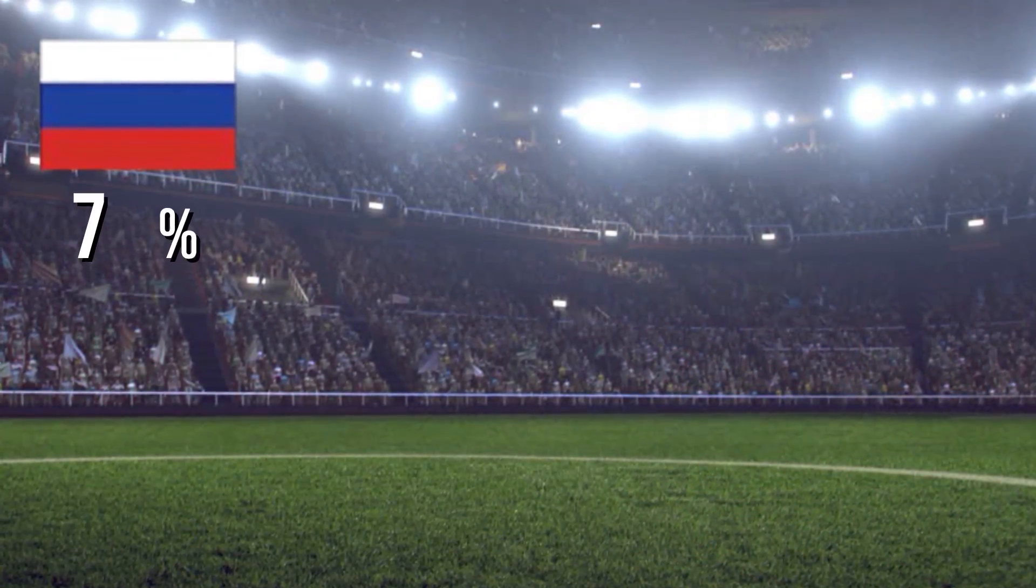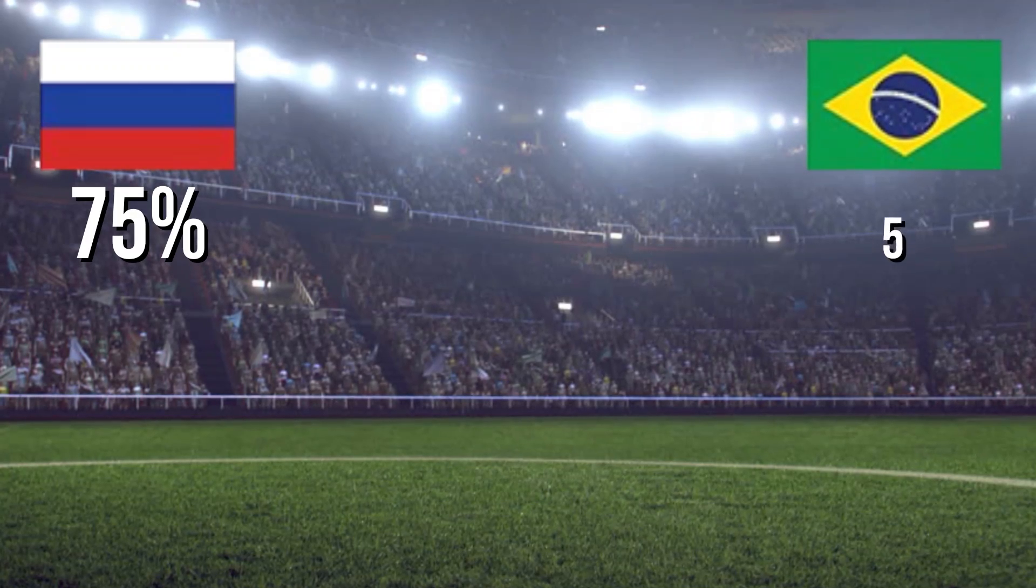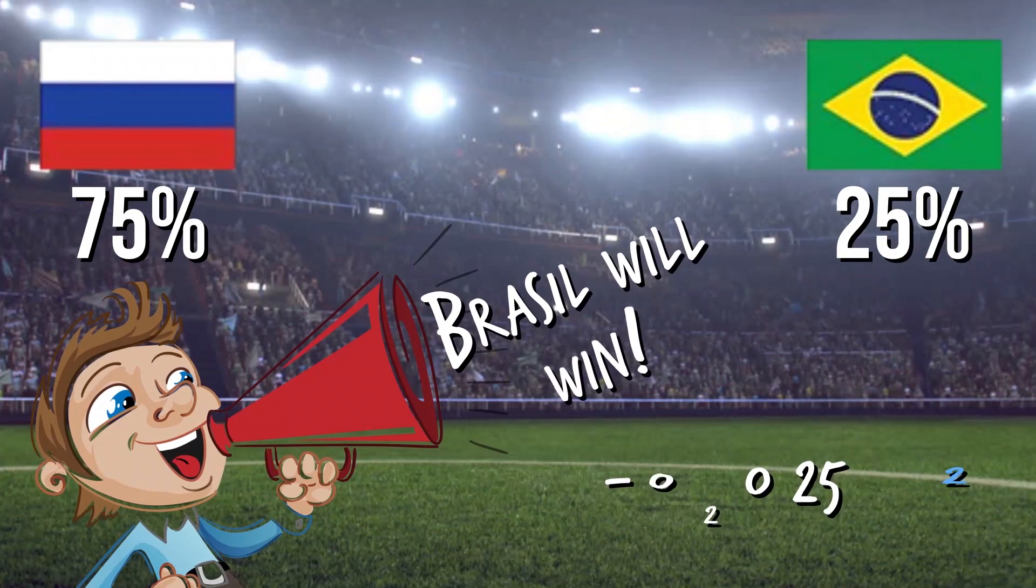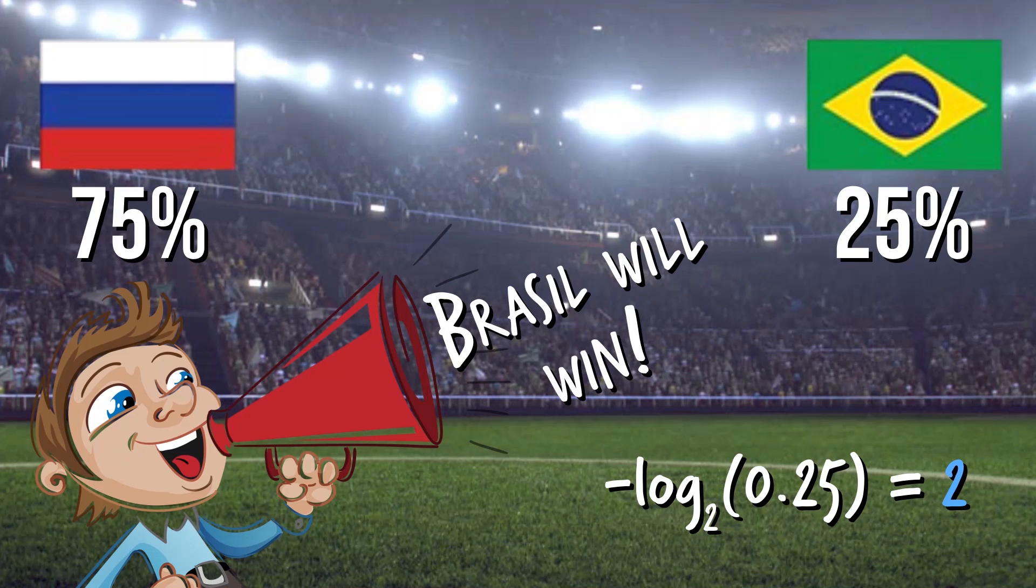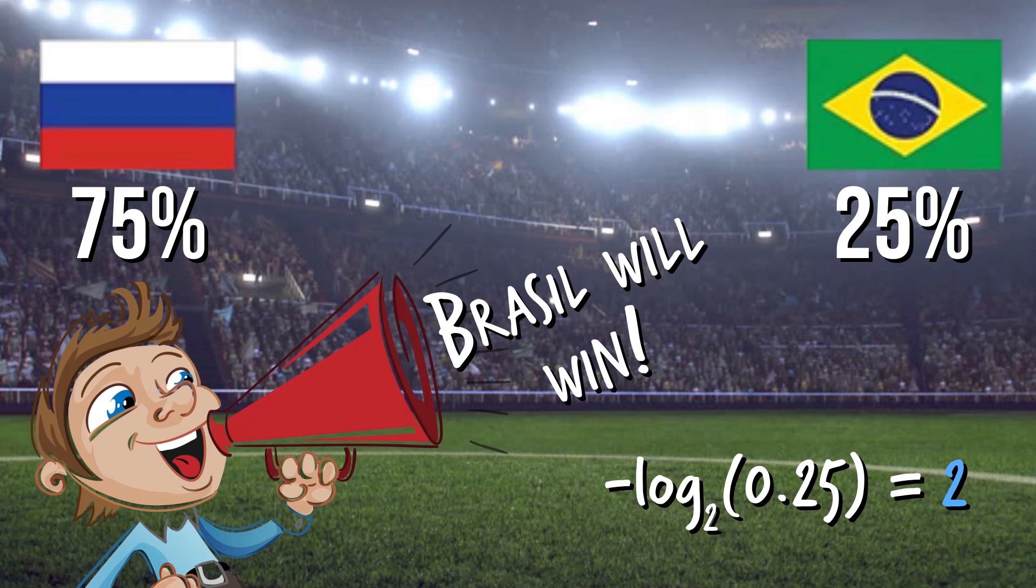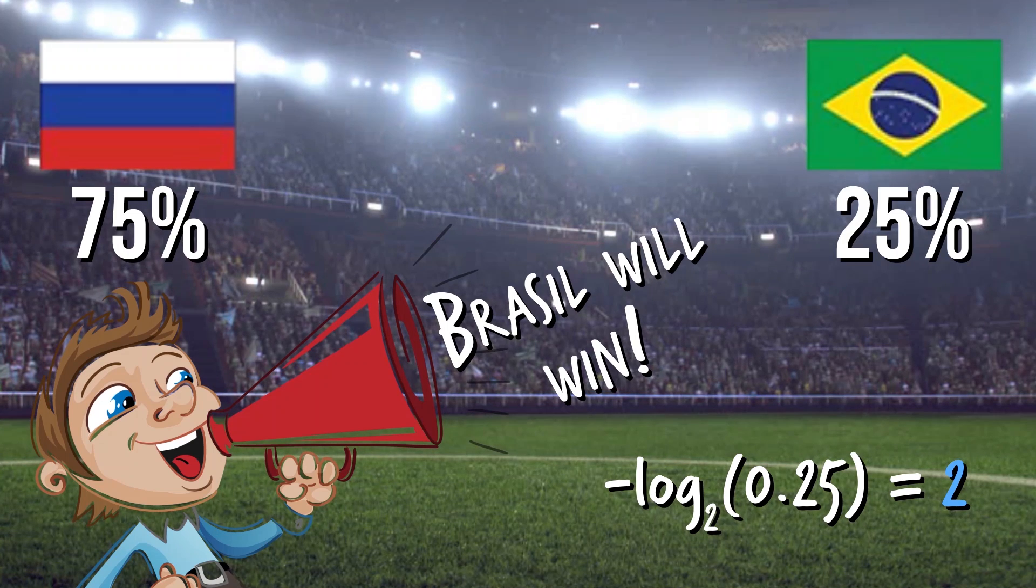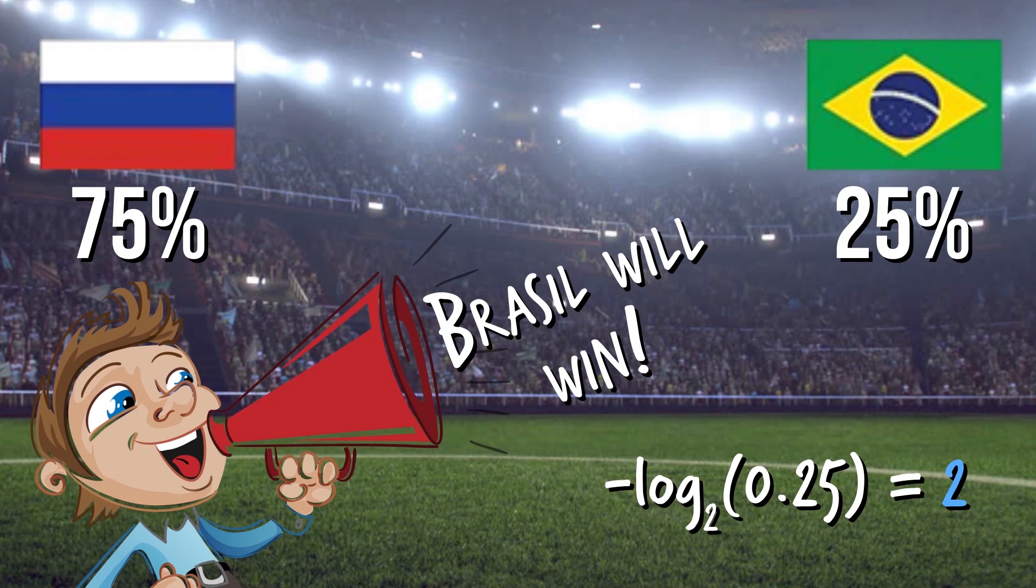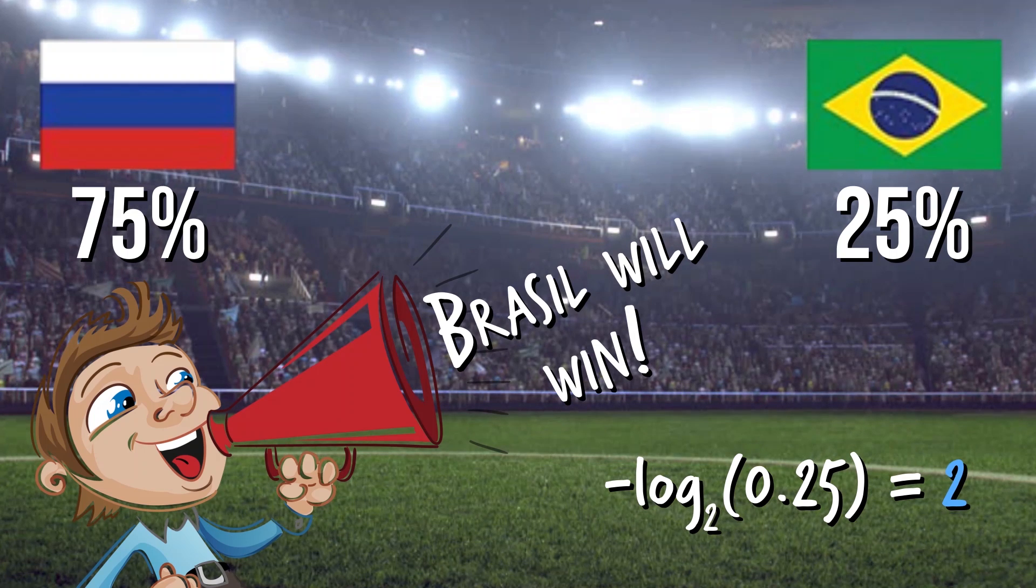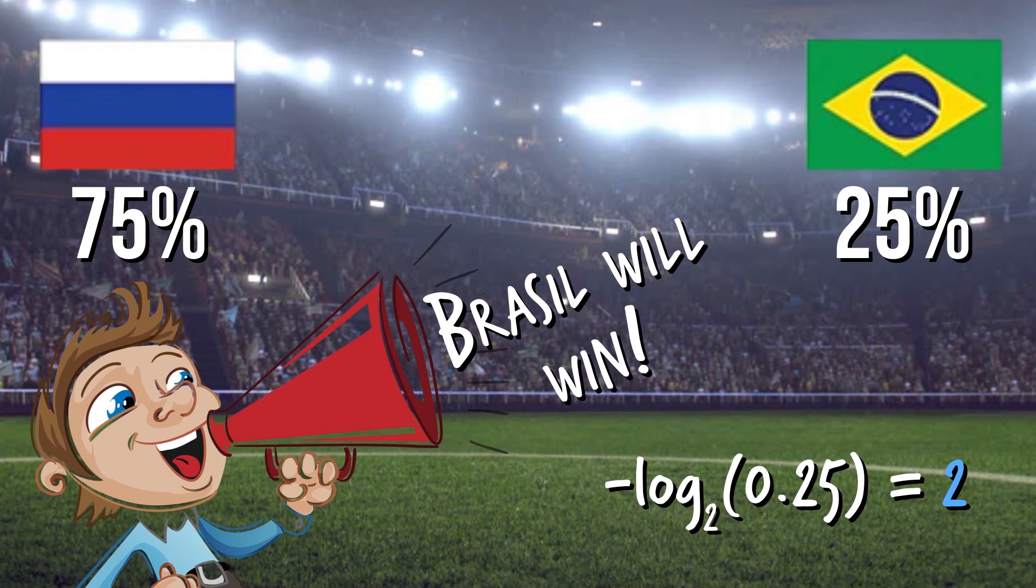Let's say though that the possibilities are not equally likely. Say one team has a 75% chance of winning and the other 25%. If the service says the less probable team will win, then the uncertainty has dropped by a factor of four, which is two bits of information. The uncertainty reduction is the inverse of the event's probability.